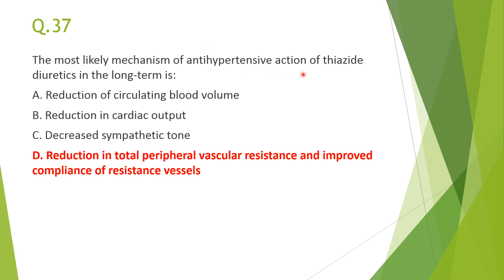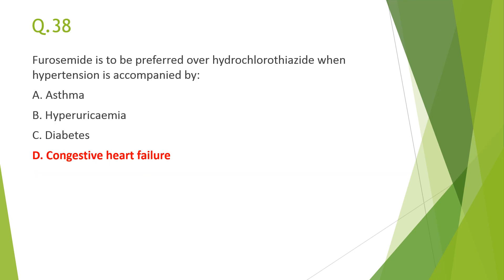Next: most likely mechanism of antihypertensive action of thiazide diuretics in the long term — answer D: reduction in total peripheral vascular resistance and improved compliance in resistance vessels. Though they reduce circulating blood volume, this is not useful long-term because reduced blood volume increases renin, activating the renin-angiotensin system and causing salt and water retention. Sodium deficiency reduces total peripheral resistance, decreasing blood pressure in the long term.